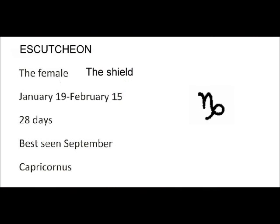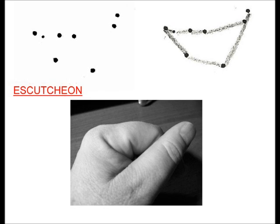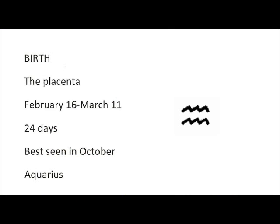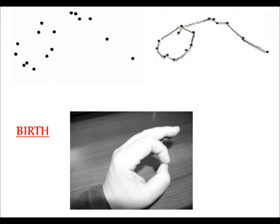Discussion. The female, the shield. January 19th to February 15th. Duration is 28 days. Best seen in September. Formerly known as Capricornis. Birth. The placenta. February 16th to March 11th. Duration is 24 days. Best seen in October. Formerly known as Aquarius.